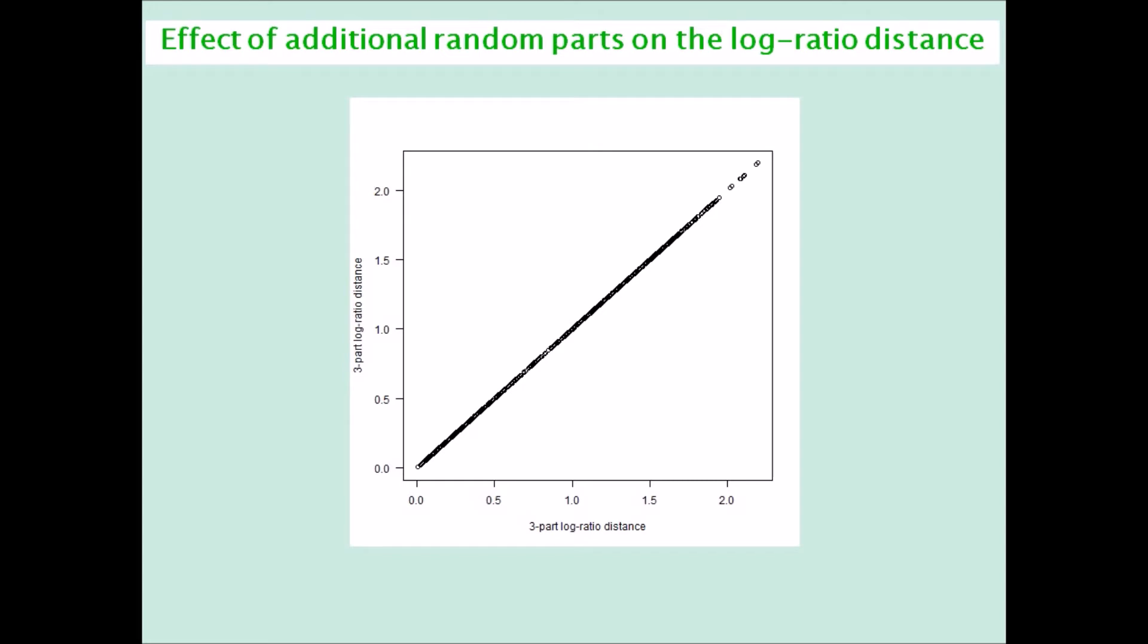When the first random part is added to the data, the vertical axis shows the log ratio distances using the four-part composition, with the horizontal axis remaining the three-part log ratio distances.